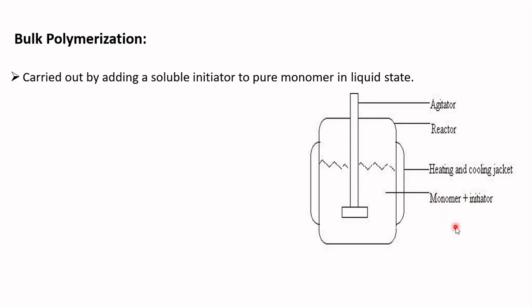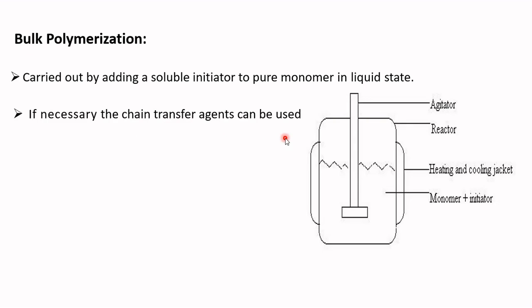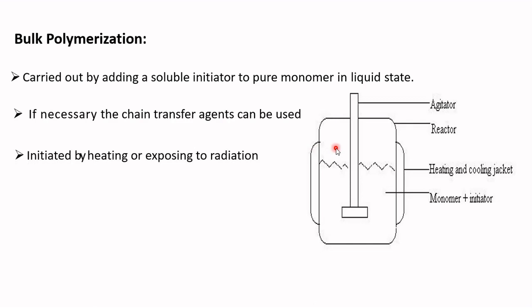If necessary, chain transfer agents can be used to control the molecular weight, and these agents must also be soluble in the monomer. The reaction is initiated by heating or exposing to radiation, and kept under agitation for proper mass and heat transfer. As the reaction proceeds, the mixture becomes more viscous and mixing becomes progressively difficult. The reaction is exothermic and a wide range of molecular masses are produced.